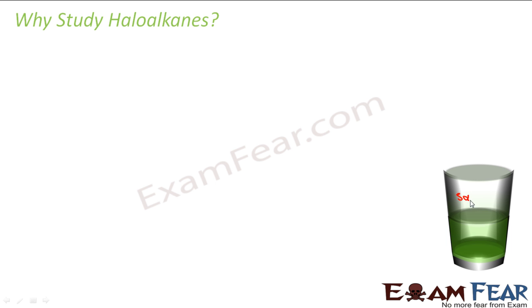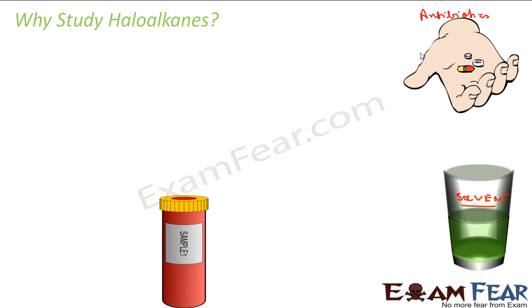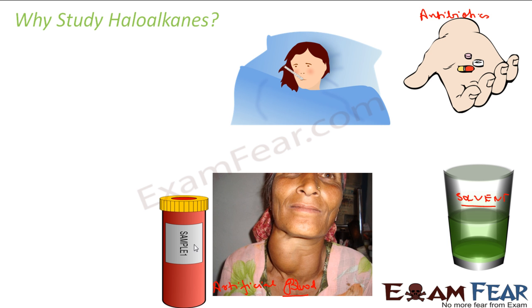Haloalkanes and haloarenes have various applications. They are widely used as solvents in various chemical reactions. They are also used to create medicines — mostly antibiotics. Research is also going on where they are used to create blood substitutes, creating artificial blood instead of using natural blood. They are also used to treat diseases like fever, goiter, typhoid, and malaria.